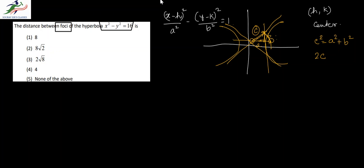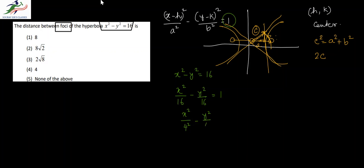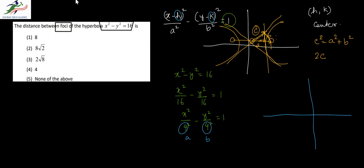Now let us look at the given hyperbola x² - y² = 16. To convert it to standard form, we divide both sides by 16, giving x²/16 - y²/16 = 1, or x²/4² - y²/4² = 1. We notice that both a and b are equal to 4, and h and k are 0, so the center of the hyperbola is at the origin. When y = 0, x = ±4, so the vertices touch the x-axis at ±4.